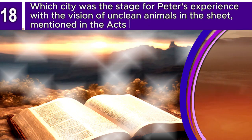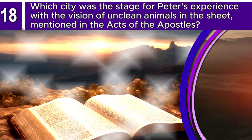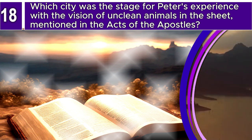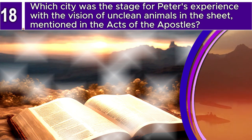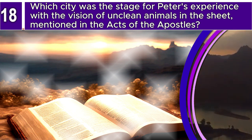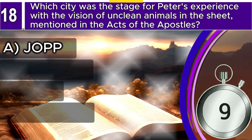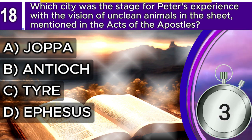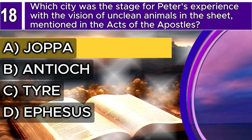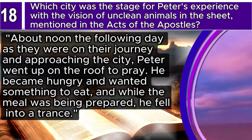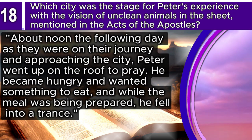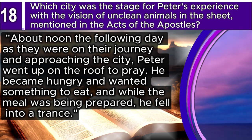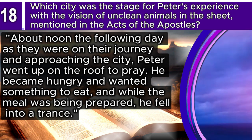Question 18. Which city was the stage for Peter's experience with the vision of unclean animals, as mentioned in the Acts of the Apostles? A. Joppa, B. Antioch, C. Tyre, D. Ephesus. The correct answer is A. Joppa. Acts 10, verses 9–10 says: About noon the following day, as they were on their journey and approaching the city, Peter went up on the roof to pray. He became hungry and wanted something to eat, and while the meal was being prepared, he fell into a trance.